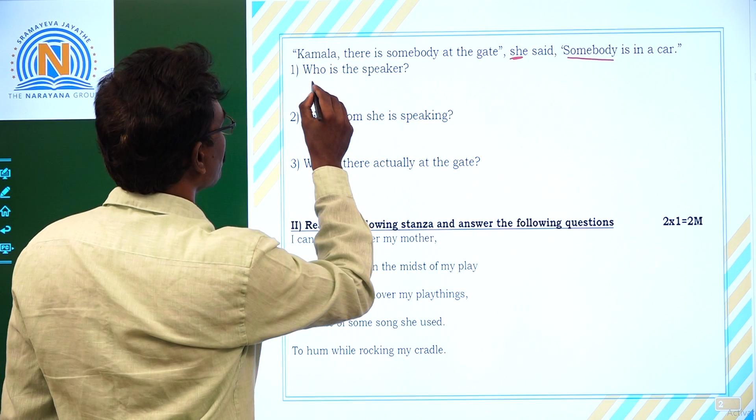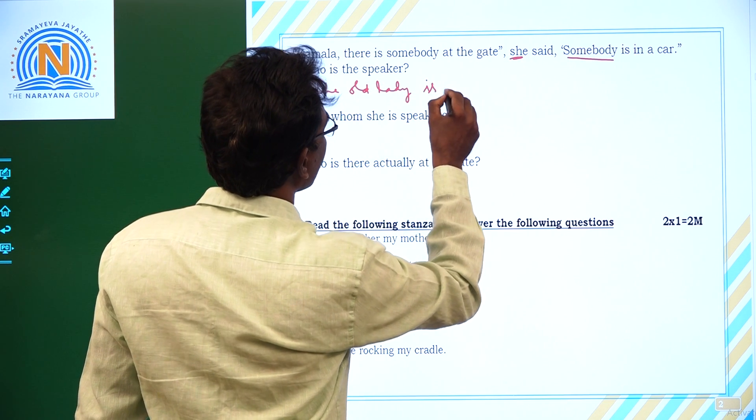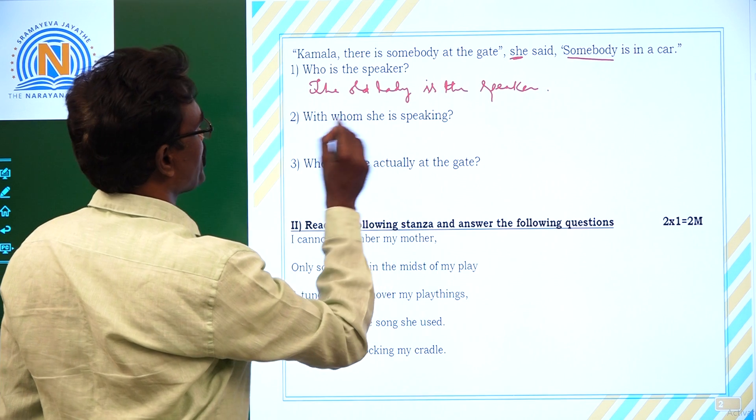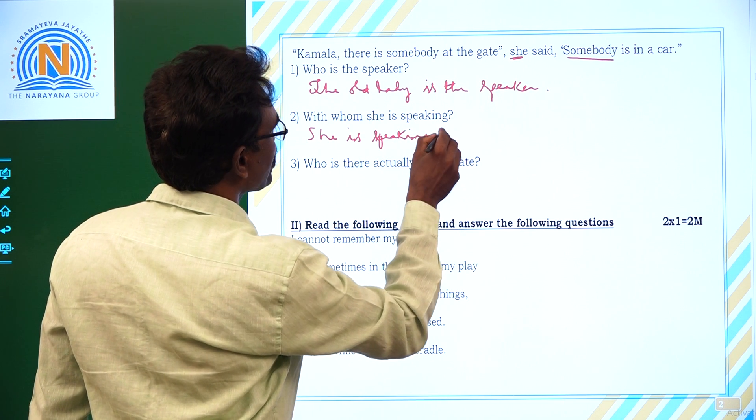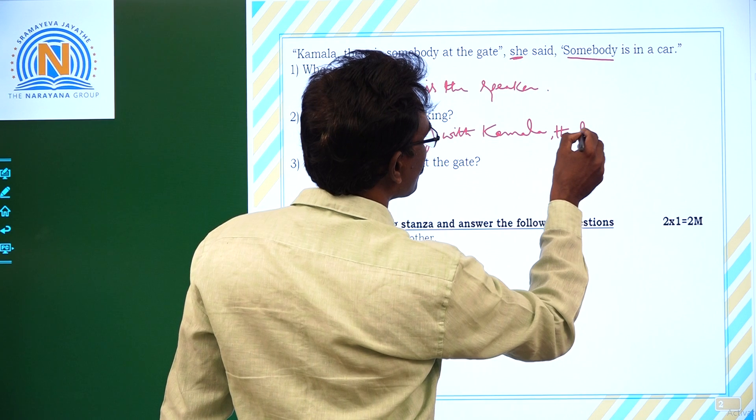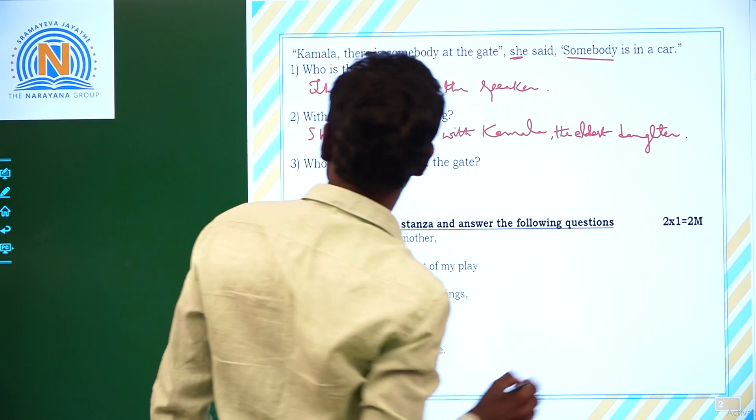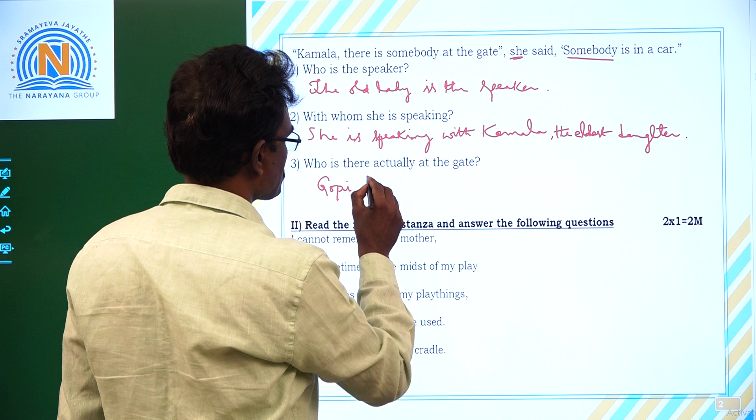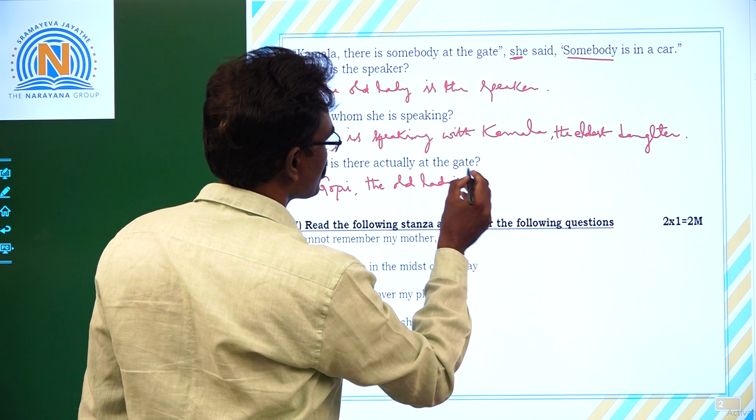Who is the speaker? The bold lady or woman is the speaker. Next, with whom she is speaking? She is speaking to Kamala, the eldest daughter. Who is there actually at the gate? Gopi, the bold lady's son.